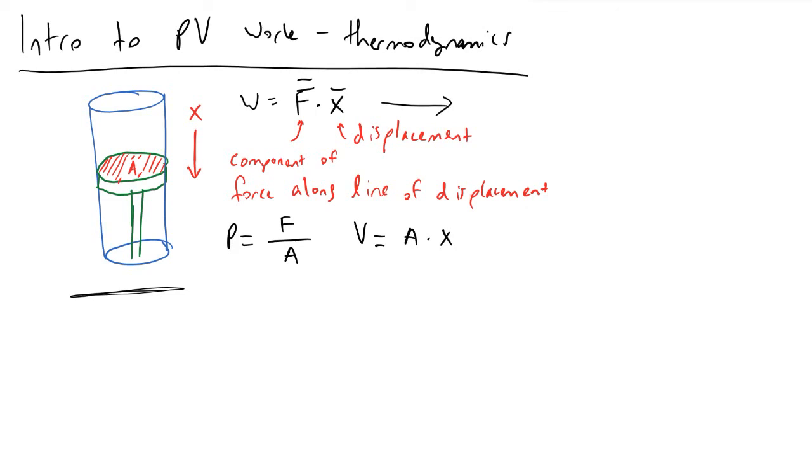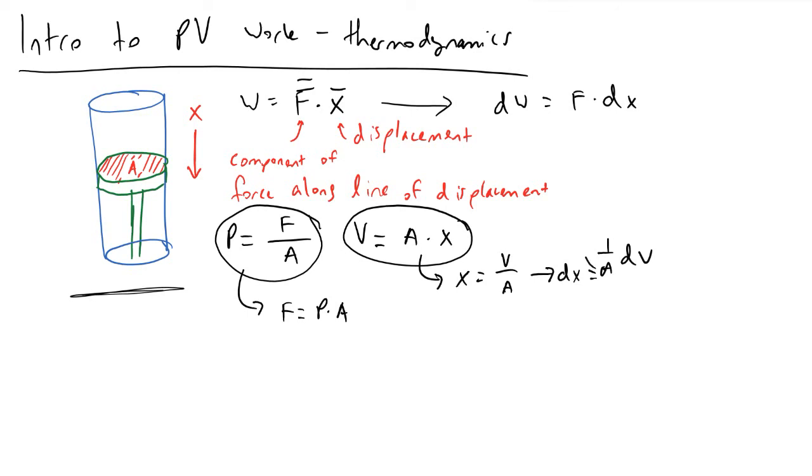With these two things out of the way, when we begin to look at differential control volumes, if we were to look at the amount of work done, we take the derivative of work. We end up with force times dx. As we turn to these definitions, if we rearrange this and multiply both sides of the equation by A, we will recognize that F is equivalent to pressure times area, and x here is equivalent to volume divided by area. dx is equivalent to dV times one over area if we assume area is constant.